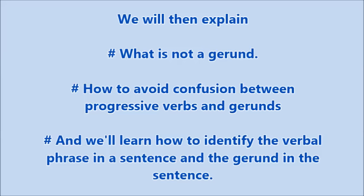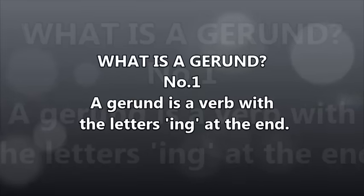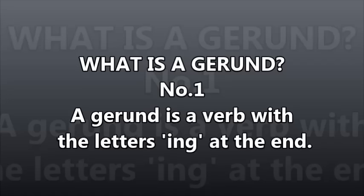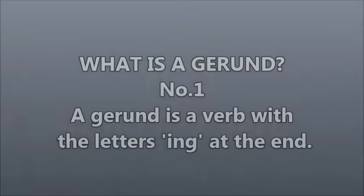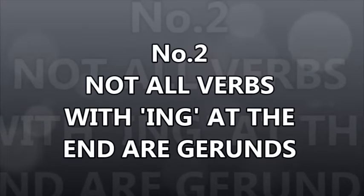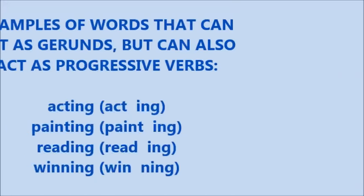It may sound like a lot to take in, but we're going to do all of that. Number one — take a note of this, please. What is a gerund? A gerund is a verb with the letters -ing at the end. Second point, number two: not all verbs with -ing at the end are gerunds, and that same rule applies for other words with -ing at the end.